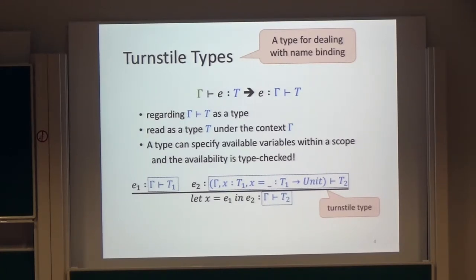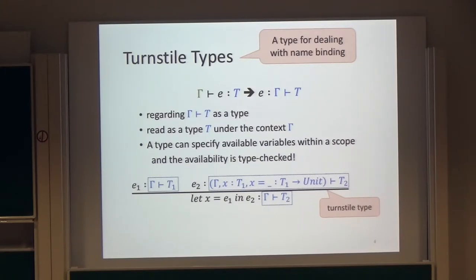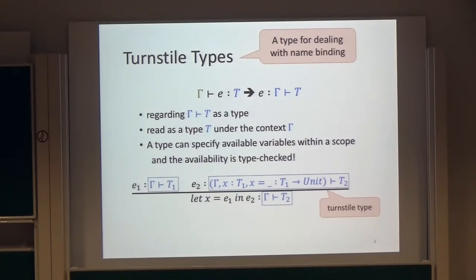A benefit of our turnstile type is that a type can directly specify available variables in a restricted scope. We have allowed not only getters, but also setters or other operators available in gamma. So programmers can define a new operator introducing a new name binding.